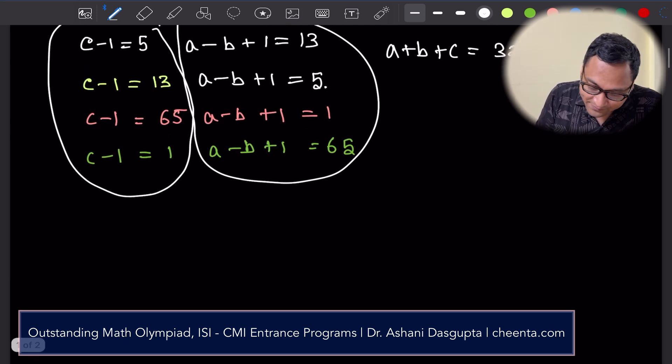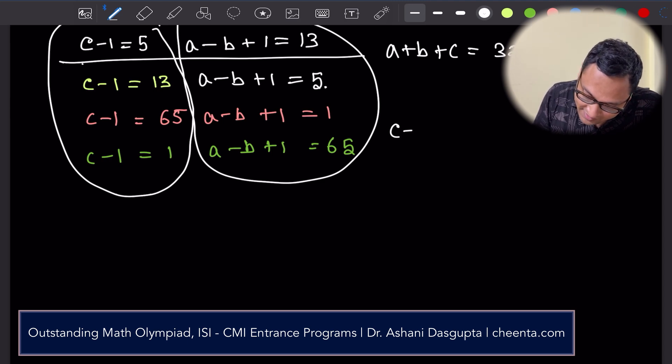Remember the conditions: a, b, c are positive integers, a is greater than c. Okay, so let's try this. Let's try the first one, so c equals 6.